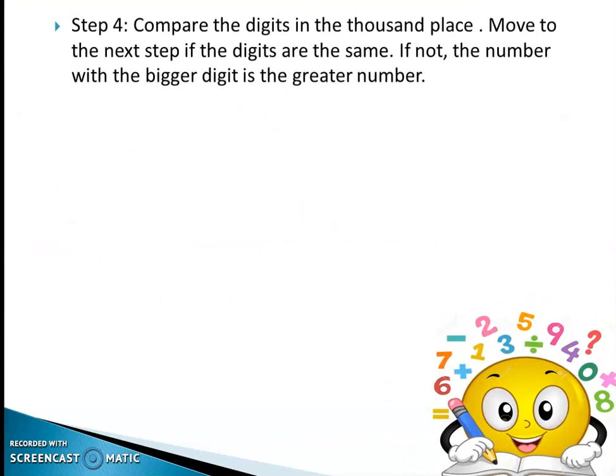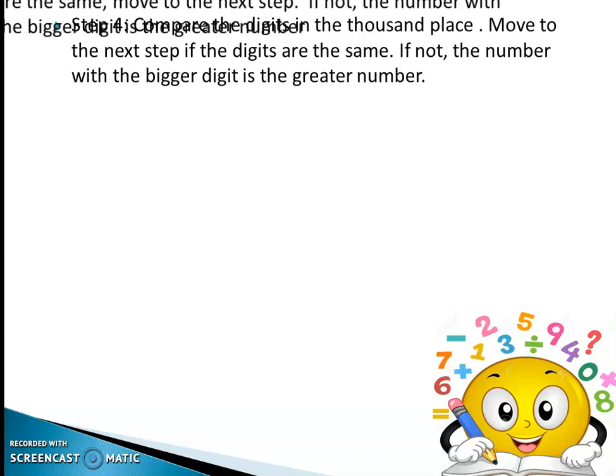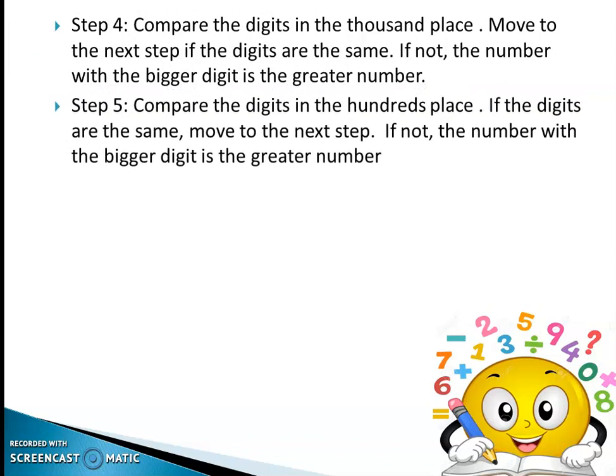Step 4: Compare the digits in the thousands place. Move to the next step if the digits are the same. If not, the number with the bigger digit is the greater number. Step 5: Compare the digits in the hundreds place. If the digits are the same, move to the next step. If not, the number with the bigger digit is the greater number.